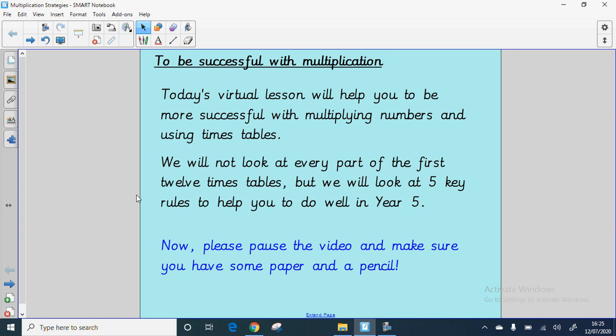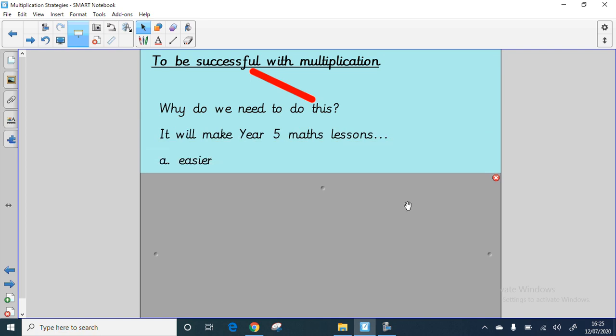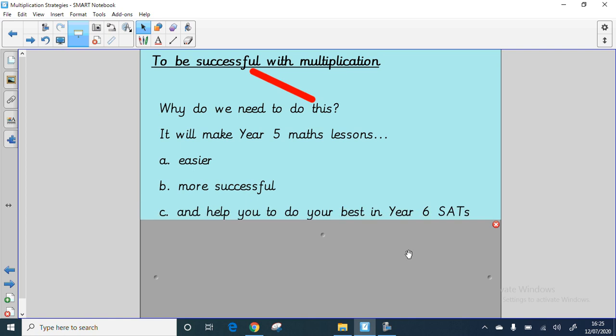It's all about being more successful with multiplication. We're not going to look at every part of the first 12 times tables, but we will look at 5 key rules to help you all to do well next year. Now please pause the video and make sure you've got some paper and a pencil. If you've now unpaused, we can proceed. It will make Year 5 Maths lessons easier, more successful, and it's also going to help you to do your best in Year 6 SATs and the transition test as well.